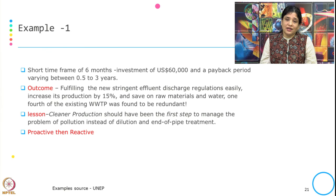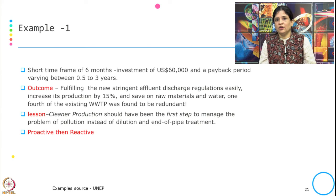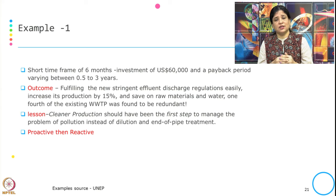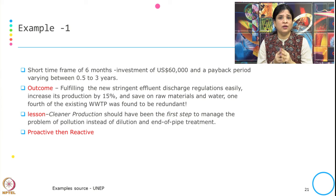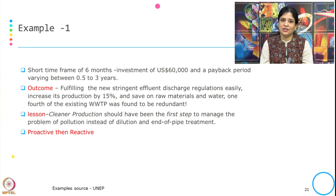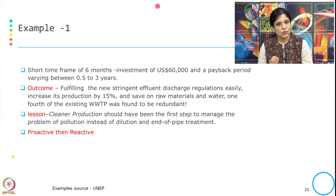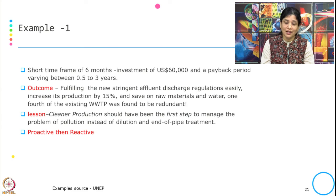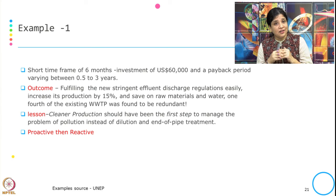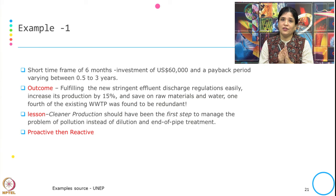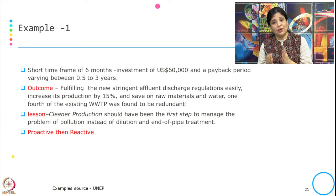Within a short time frame of 6 months, the payback period for the investment was between 0.5 to 3 years. The outcome of these cleaner production options was that they could fulfill the new stringent effluent discharge regulations easily, increase production by 15 percent, save raw materials and water, and one-fourth of the existing wastewater treatment plant capacity was found to be no longer needed because they had made changes in the process itself. The lesson from this example is that cleaner production should have been the first step to manage pollution, instead of dilution and end-of-pipe treatment.